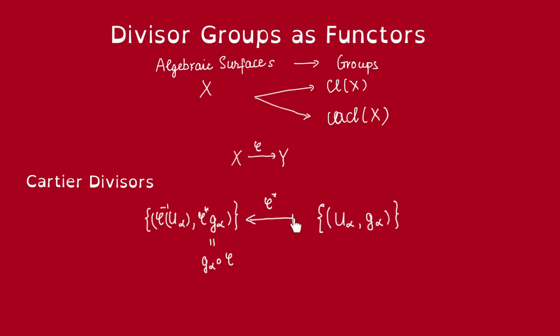We can define a map in the other direction, sending this Cartier divisor to this pullback Cartier divisor, in which all of these functions here are just pullbacks of this g_α. They are going to be rational functions on the covering, given by the pre-image of the covering U_α. Thus, the Cartier divisor group gives a contravariant functor. We can pullback Cartier divisors.